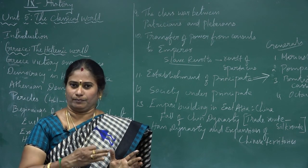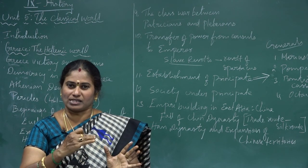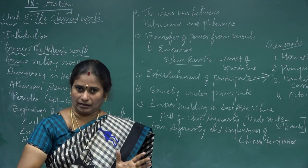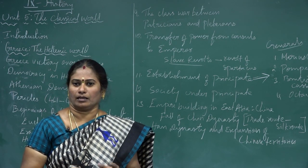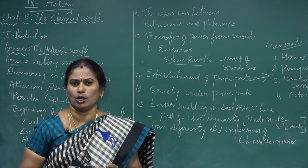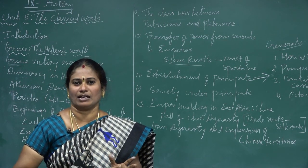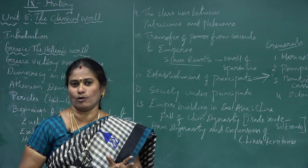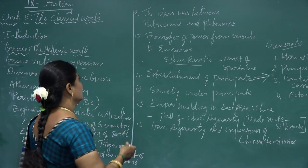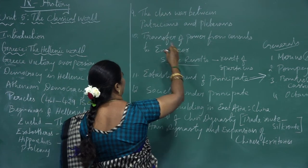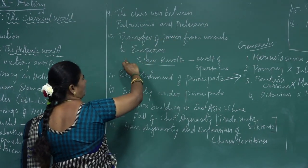The source of income to Rome was the slave trade. The island of Delos was an important place, considered a slave market. By this I am completing the topic of the transfer of power from patricians and plebeians.